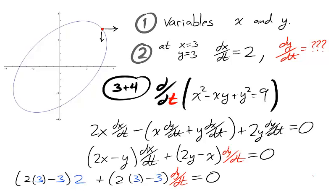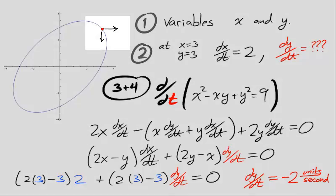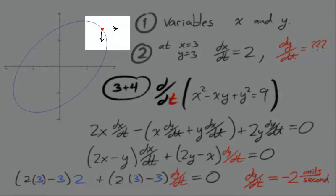Now substitute the known values. x is 3, y is 3, and dx dt is 2. Solving the equation gives dy dt, the vertical rate of change, is negative 2 units per second. Notice this is negative, like we expected.